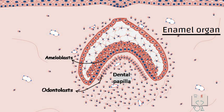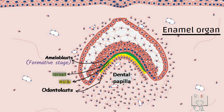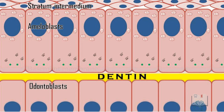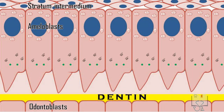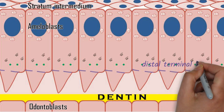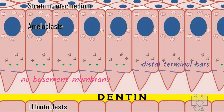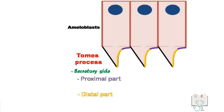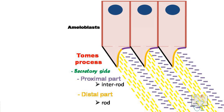Formative stage: Once cells of the dental papilla differentiate into odontoblasts, they start depositing dentine. This dentine sends a signal to the ameloblasts to form enamel, hence entering the formative stage, and the enamel organ enters the advanced bell stage. The ameloblasts elongate and develop pyramidal processes at the distal end called tomes processes. The tomes processes are separated from the cell proper by an incomplete septa called distal terminal bars. The basement membrane disintegrates in this stage. The tomes process has a non-secretory side and a secretory side; the secretory side has two parts — a proximal part and a distal part.